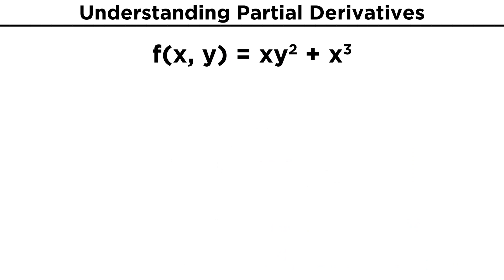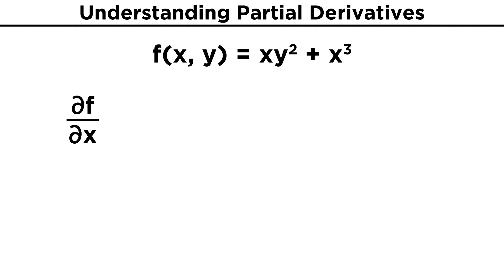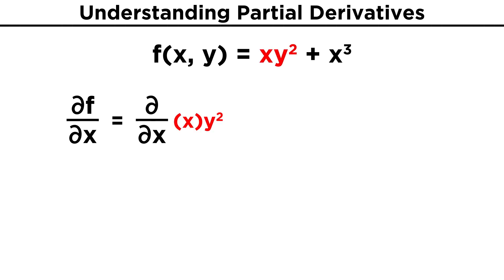Let's consider an example: f of xy equals xy squared plus x cubed, and find the partial derivatives with respect to x and y. First, df dx. We will take the derivative with respect to x just like we are used to while treating y as a constant. Remembering our power rule for derivatives, the first term's x becomes one, and treating the y squared as a constant, we are just left with y squared.